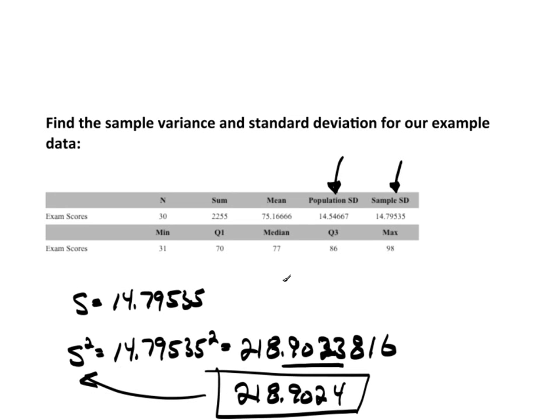Now, if this was a population, we would have simply said sigma equals 14.54667, and sigma squared equals 14.54667 squared, whatever number that turns out to be. Just stick that in a calculator and find it.